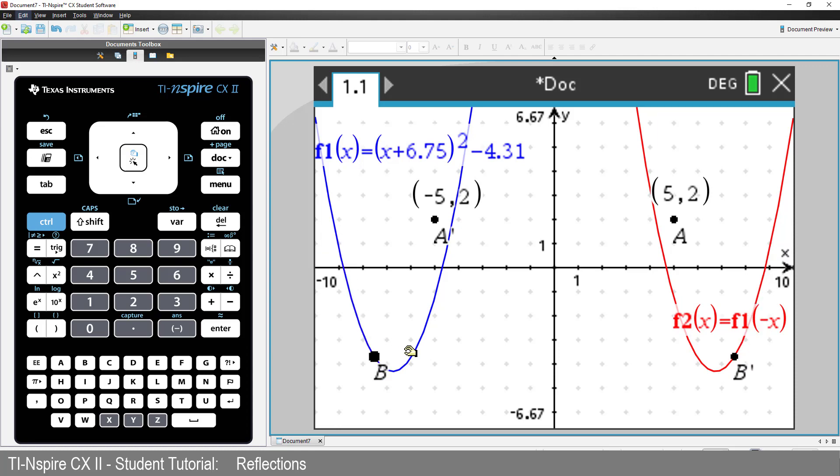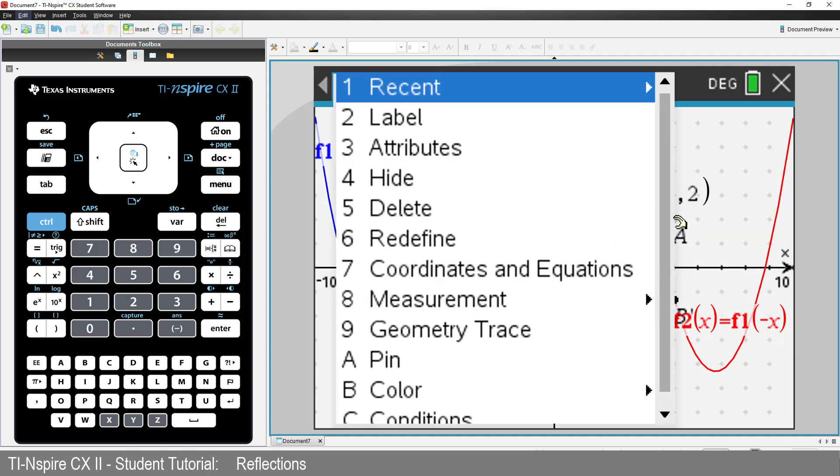Now we have two more types of reflections to explore. So we don't get them all confused, let's delete all the reflections in the y-axis first. Hover over each item to be deleted, press Control followed by Menu and select Delete.